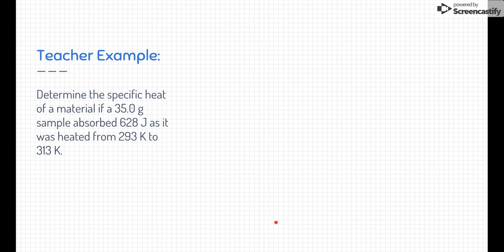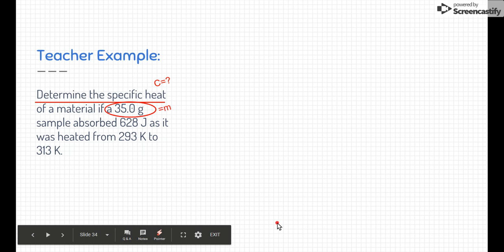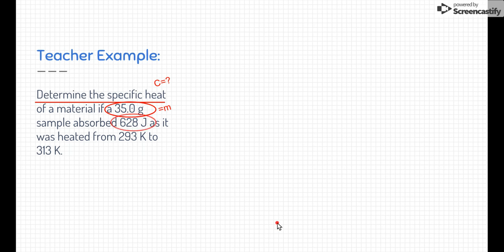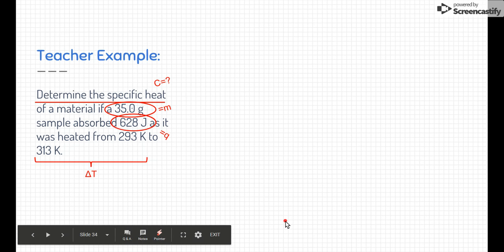So if we kind of go through this problem, let's first figure out what the problem is asking. The problem itself is to determine the specific heat. So we're looking for C. Next, I see this 35.0 grams. That's M for mass. And then it says the sample absorbs 620 joules. Joules is a form of energy. And so specifically, this is Q. Now, it absorbed it, so it's a positive Q. It's gaining energy. And then it was heated from 293 Kelvin to 313 Kelvin. So Kelvin is a temperature. And so those two numbers there are our change in temperature.